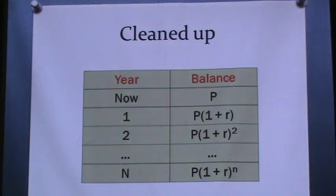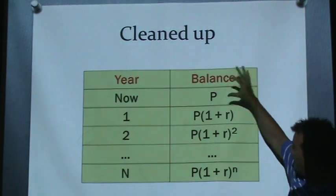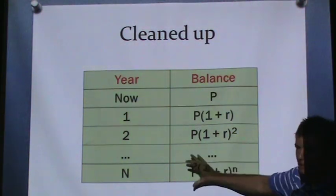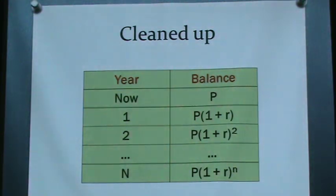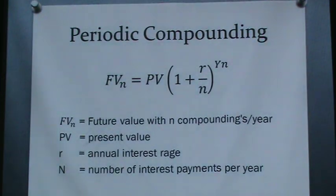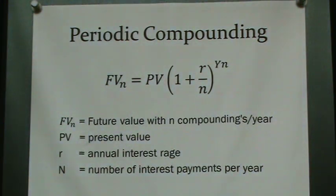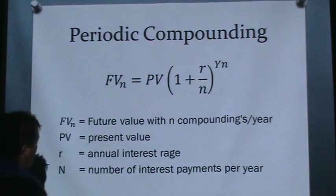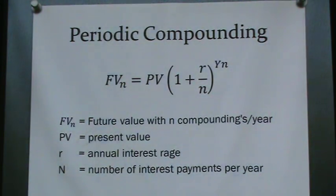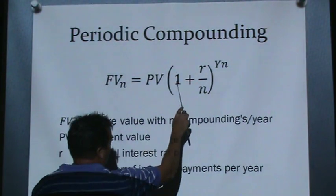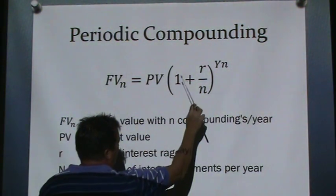This formula applies to a loan where you borrow an amount of money, make no payments along the way, and at some point later we calculate how much you'd have to pay. R represents the interest rate. This introduces the concept of present value and future value. The future value of some money equals the present value times 1 plus the interest rate.